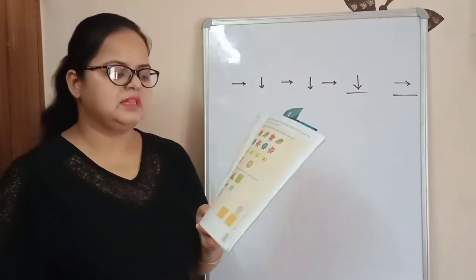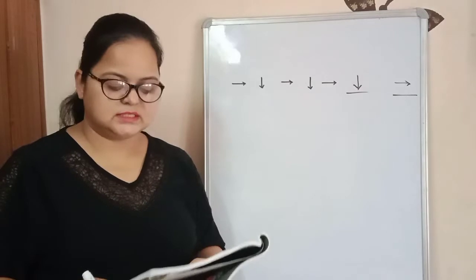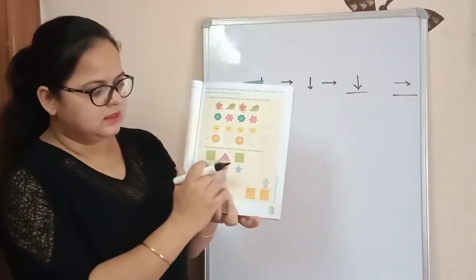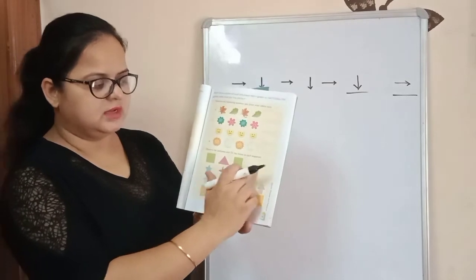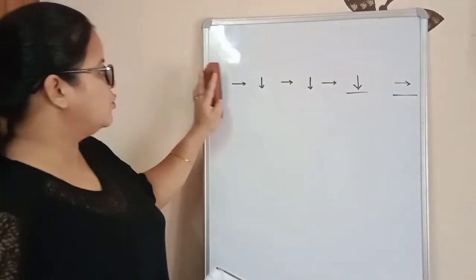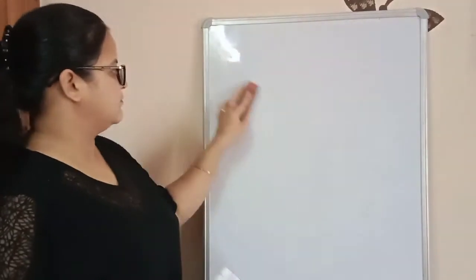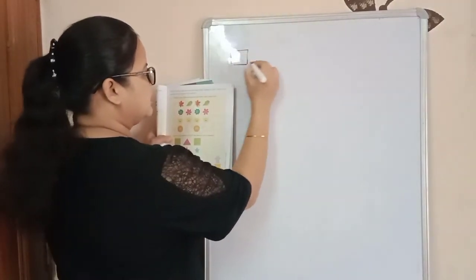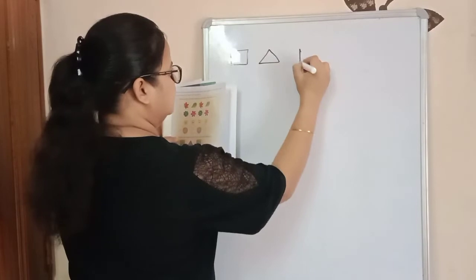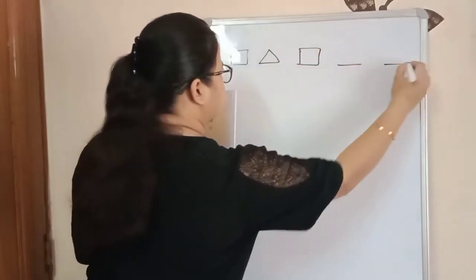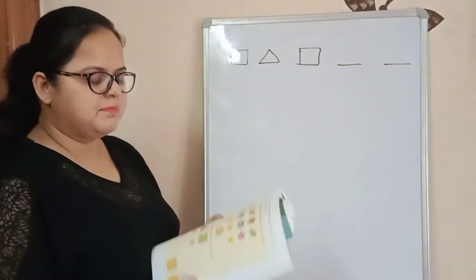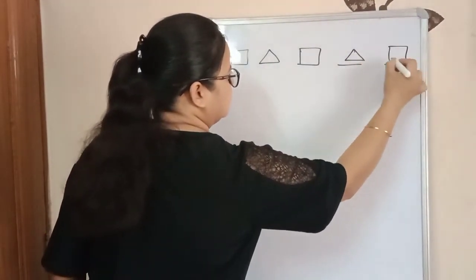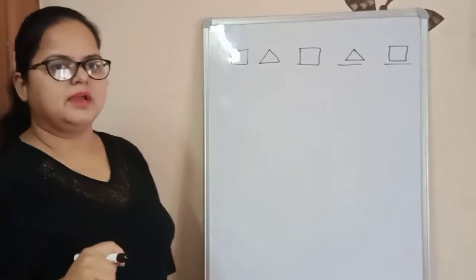Observe the patterns and fill the boxes in each sequence. The first one is square, triangle, square. Then we have two blank boxes. The first is square, second is triangle, third is square. And here we have two blank boxes. Here we will make a triangle and another square.